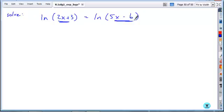So here, if you subtract a 2x, add a 6, divide by 3, you get your value, x is equal to 2.